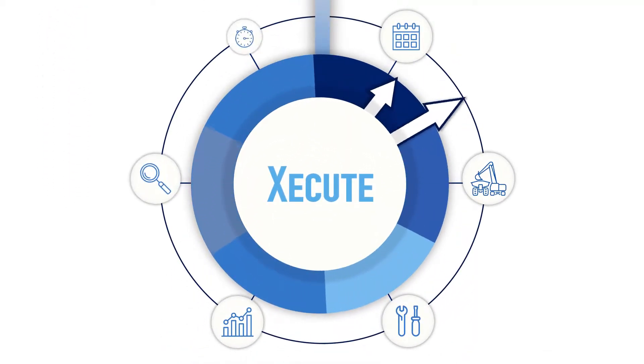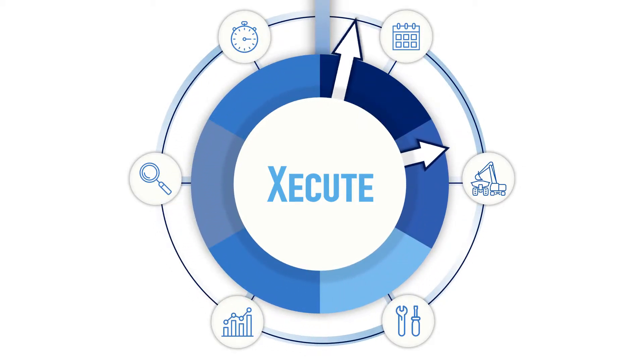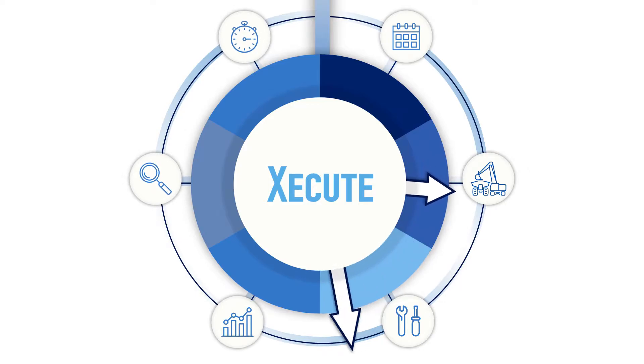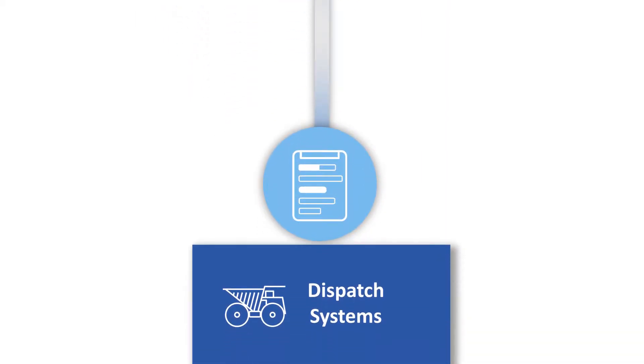RPM Global's Execute is different. It is a live planning environment that automates many of the steps required to keep a plan calibrated to the operation's current position at shift level detail. The result is a practical execution plan that is visual and easy to understand, and is automatically provided to dispatch systems.